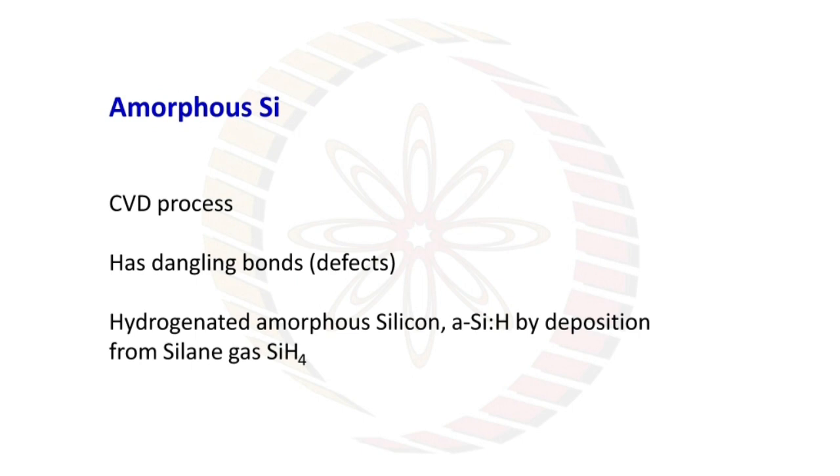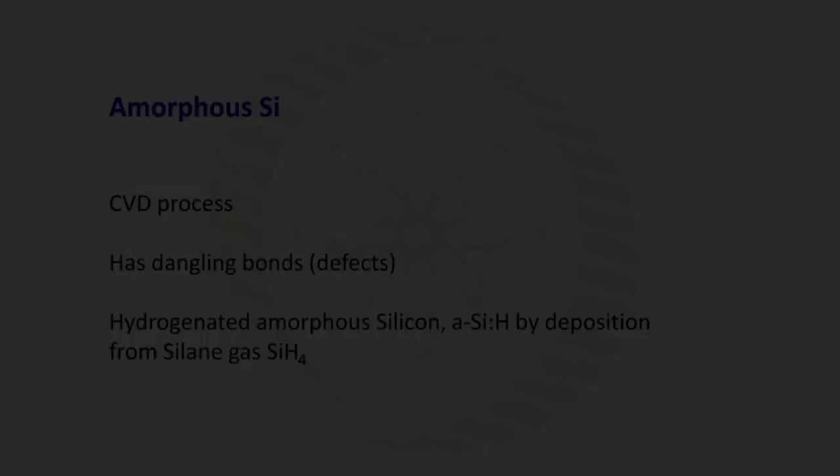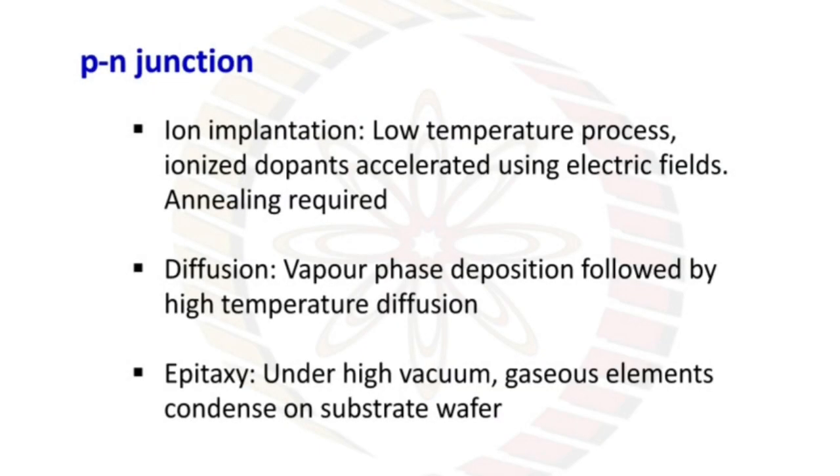To construct a P-N junction: ion implantation, low temperature process, ionized dopants accelerated using electric fields, annealing required. Diffusion: vapor phase deposition followed by higher temperature diffusion. Epitaxy: under high vacuum, gaseous elements condensed on substrate vapor.